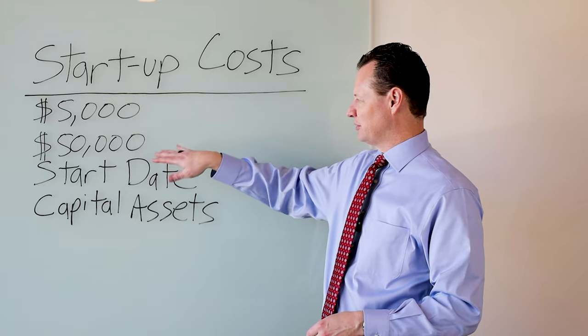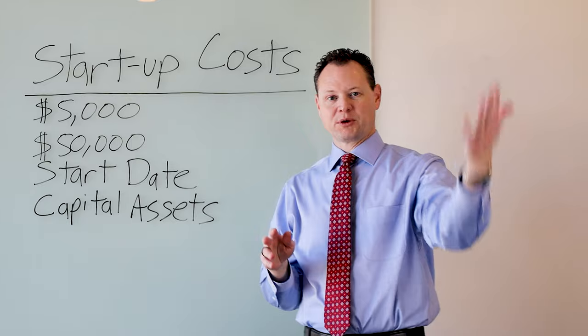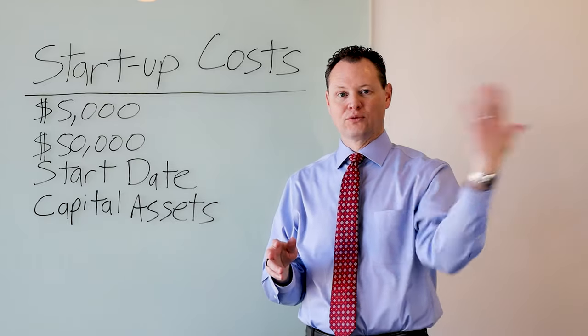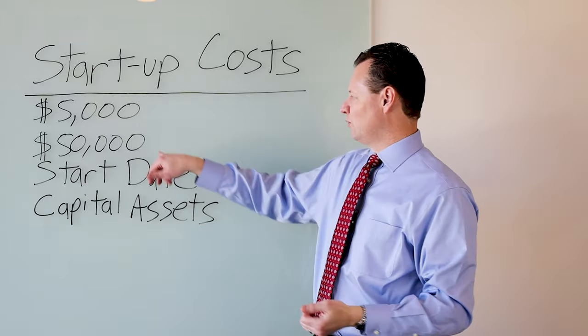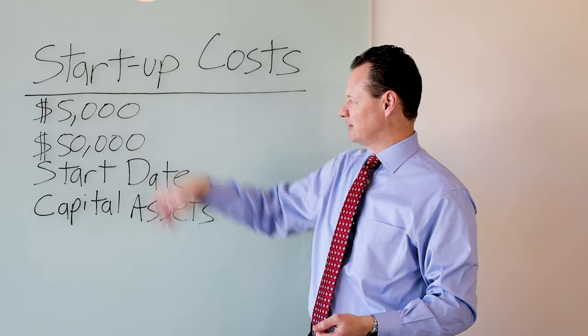Now we have this $50,000 number. The $50,000 number is when our startup costs, when our operating costs go over $50,000, then we start to reduce down how much that we can deduct of this $5,000.